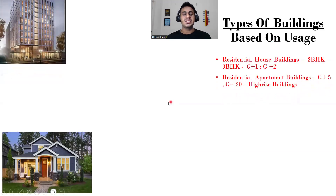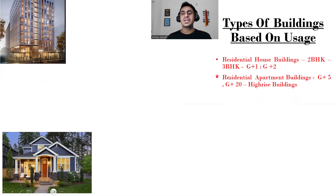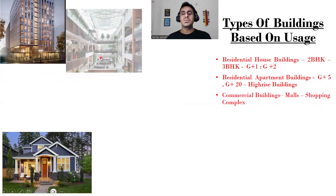The second type is residential apartment buildings. These are residential only, but constructed as apartments — G+5, G+10, G+15, up to G+20, G+30, G+40, or G+50 story buildings. That comes under the residential apartment building category. If it is a 30 or 40-story building, we call it a high-rise building.